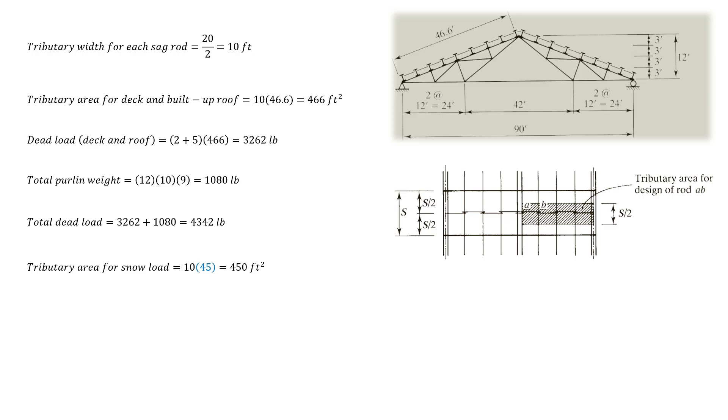The tributary area for snow load is the projected area and thus is 45 multiplied by the tributary width 10. The total snow load is then 8100 pounds. From ASCE 7 we obtain the governing load combination.